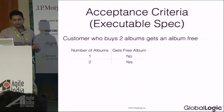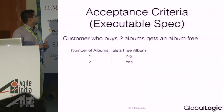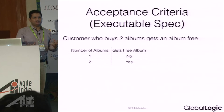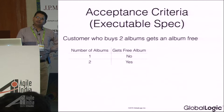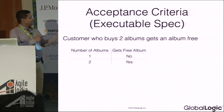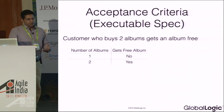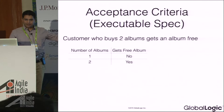This is how acceptance criteria looks. Specification by example means you have specs, but with examples you get more clarity. If I say 'customer who buys two albums gets one album free,' I'm giving an example. One album? No. Two albums? Yes. It's a very simple example, but the concept extends to complex examples as well. Based on that, the QA creates acceptance test cases as executable specs, and the team executes them.